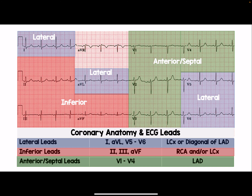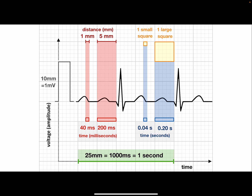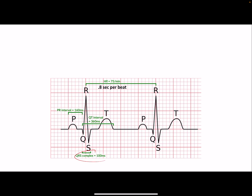Each small box on the EKG is 40 milliseconds. Five small boxes make one big box, which is 200 milliseconds (0.2 seconds). Five big boxes equal one whole second. We should expect the QRS complex to be about 100 ms, the PR interval about 160 ms, and the QT about 360 ms.